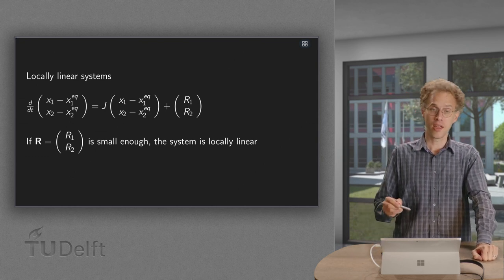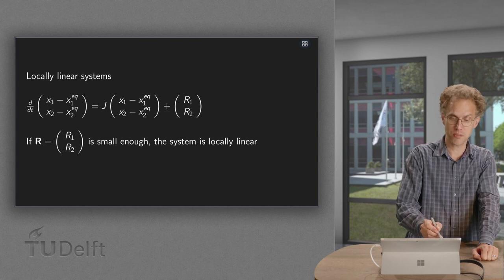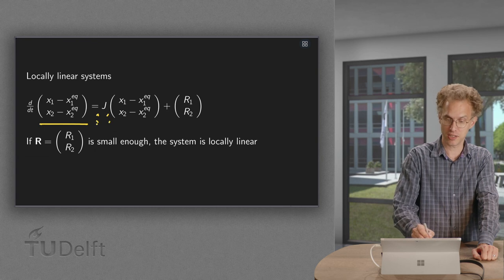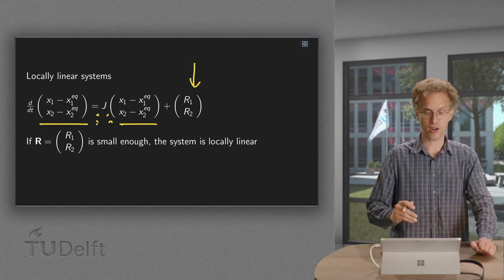So what's going on? If we have our locally linear system, so we rewrite d/dt of u equals the Jacobian matrix times u, then we also have some remainder r1, r2.